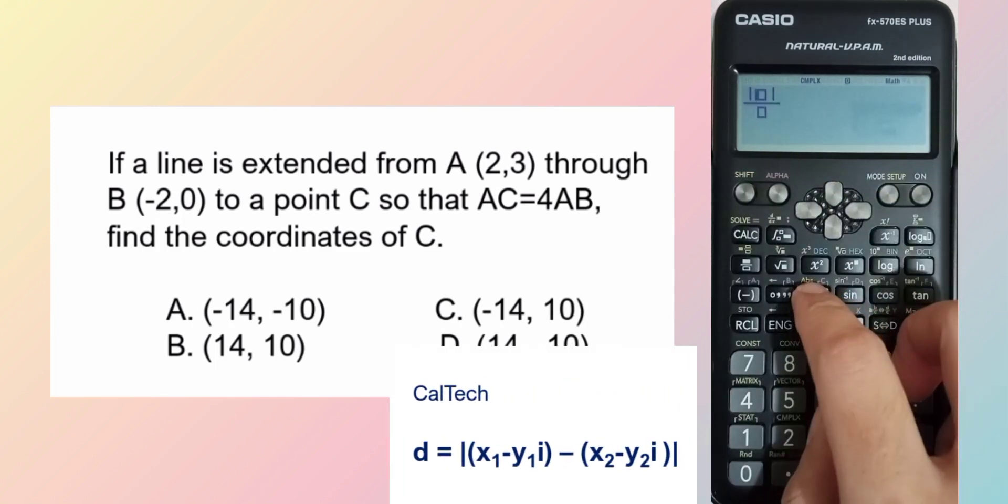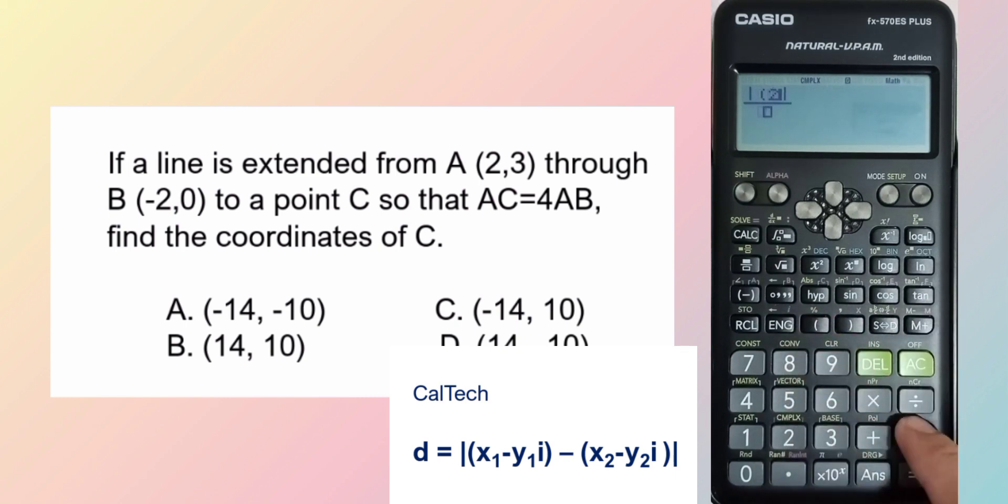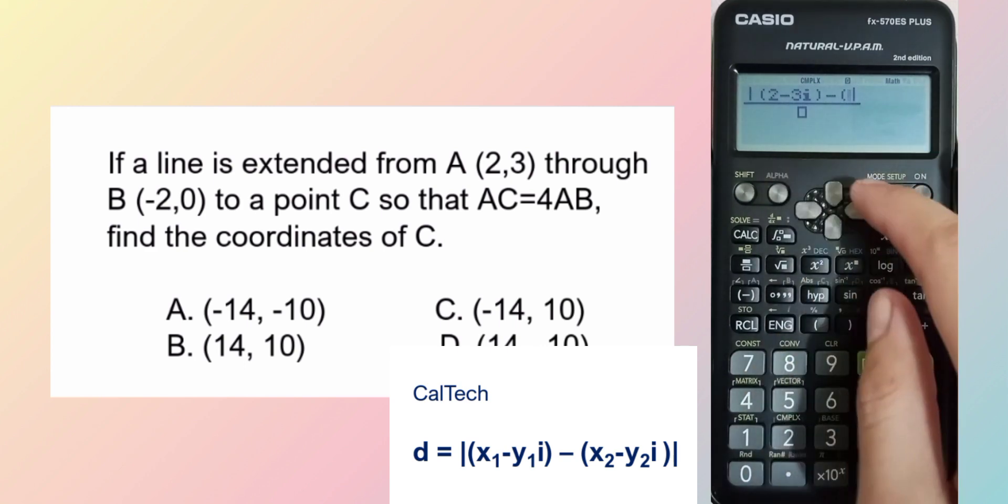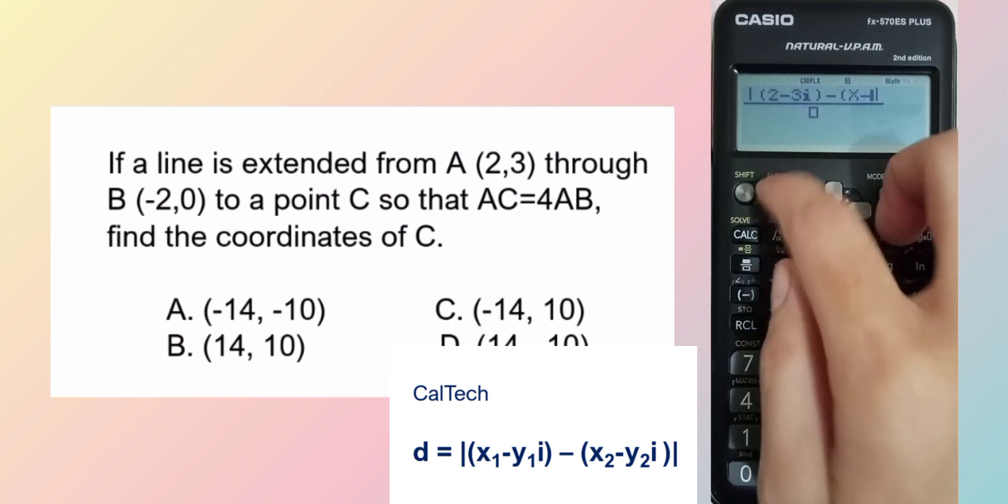So computing AC, shift type for absolute value symbol. So A is 2 minus 3I minus C, let X and Y be the coordinates of point C. So X minus YI,